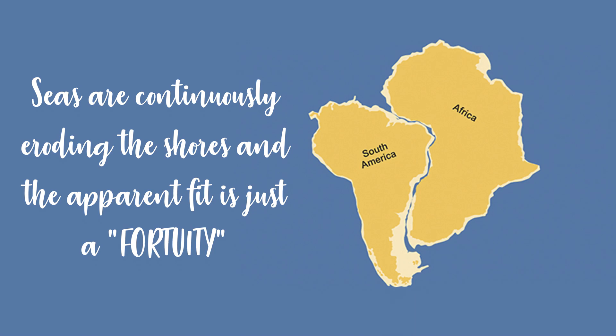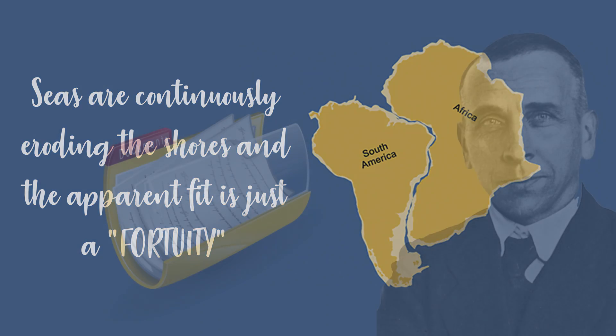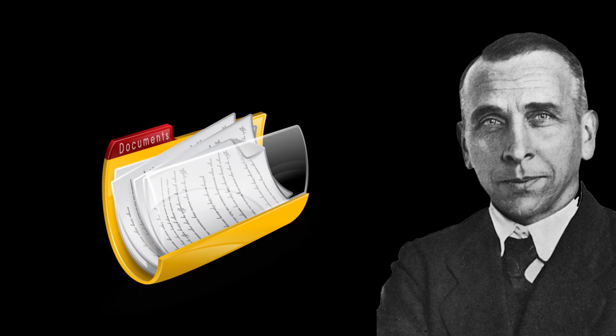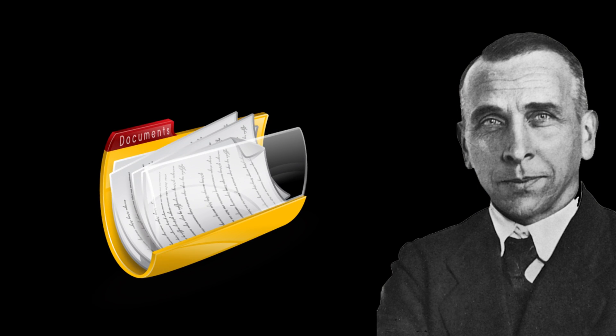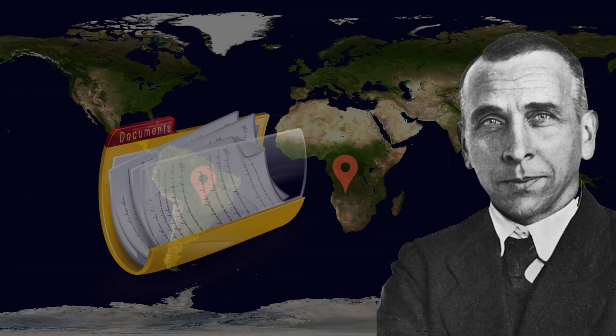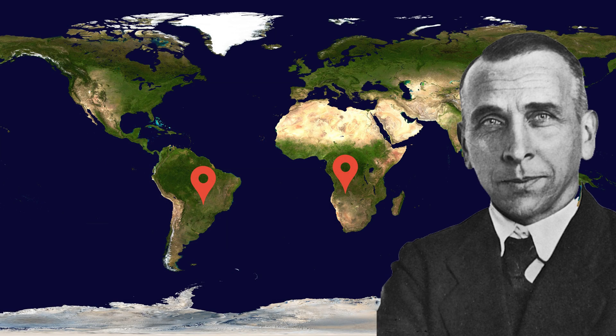So a disillusioned Wegener began to think that perhaps he was wrong. Until, that is, he found a scientific article, written by a biologist, explaining that identical fossil species had been found in both South America and Africa. So, there should have existed some kind of land connection so they could move from one place to the other.